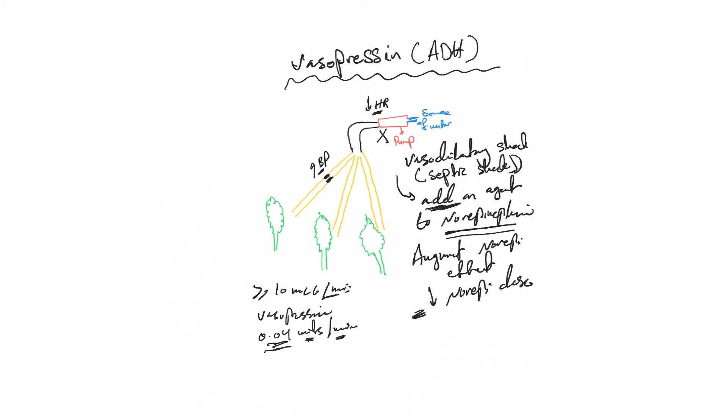Titrate down levophed. I keep vasopressin until levophed requirement is really low, less than 10 mcg or even less than 5 mcg. This is really up to you. Then get rid of vasopressin and leave levophed. It helps augment the action of norepinephrine and decrease the dose required.